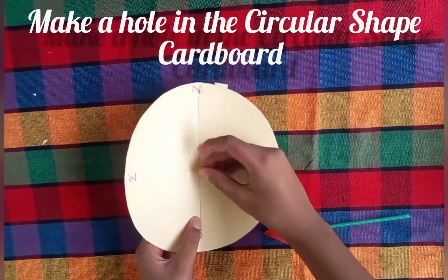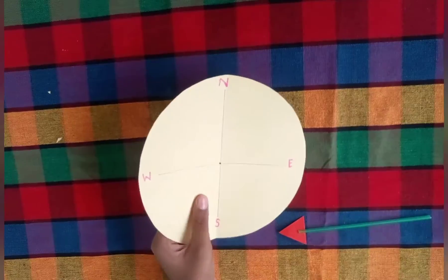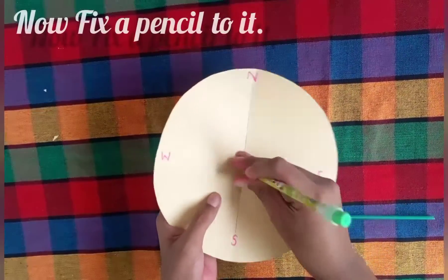Now make a hole in the circular shaped cardboard like this and fix a pencil to it.